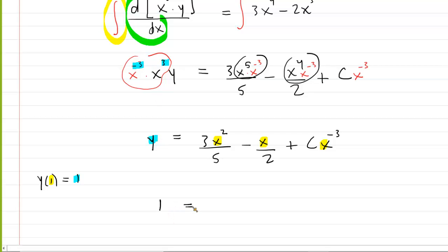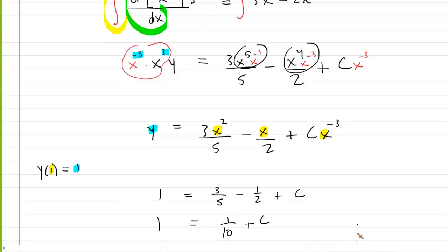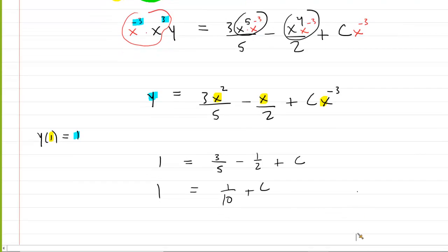So, we're going to have 1 equals, over here, this just will become 3/5 minus 1/2, and then plus C, because 1 to the negative 3 is just a 1. Why don't we subtract the 3/5 and the 1/2? You'd have to find common denominators and all that good stuff. But we'll omit that. That just is 1/10 plus C. And then we'll subtract 1/10 from both sides of the equation to get 9/10. So, we figured out the constant of integration.